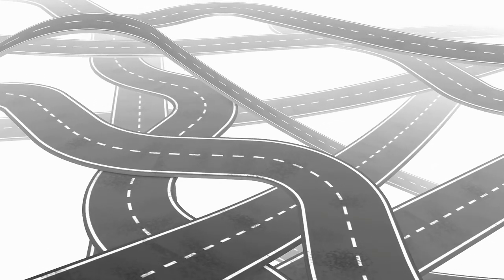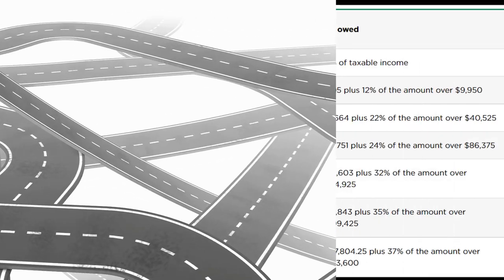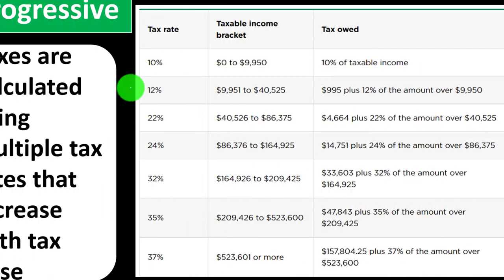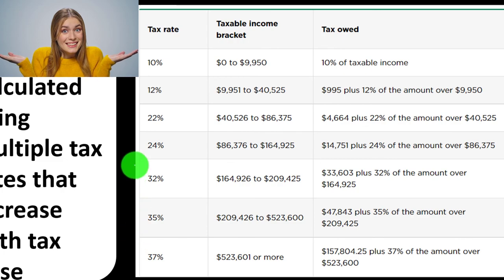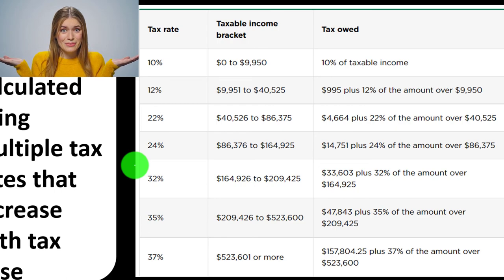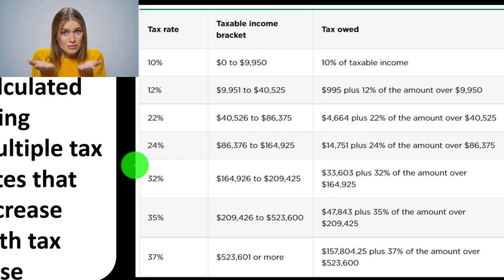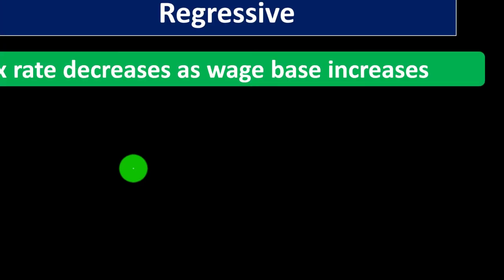You could propose tax laws asking: would it be beneficial to go from the current seven tiers down to maybe three tiers? That would be less progressive or more flat. Or would it be better to have more tiers, making it more progressive and less flat? Really, what you're often talking about is whether the tax is more or less flat or progressive.